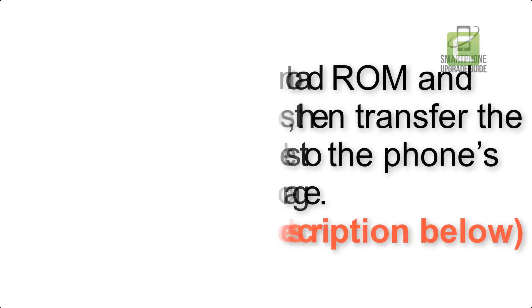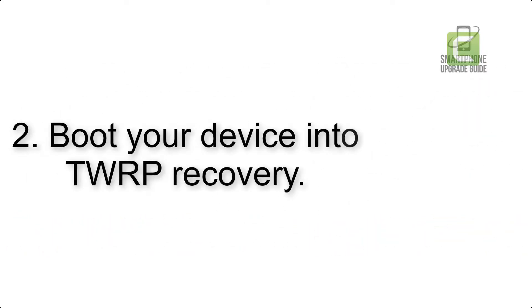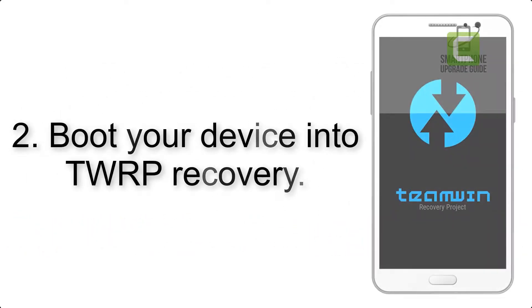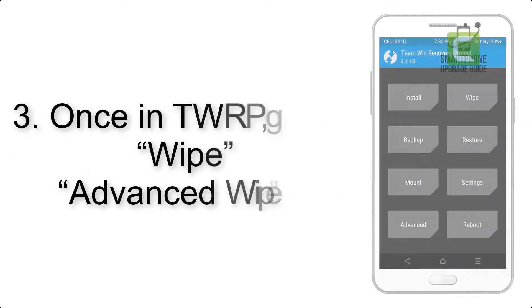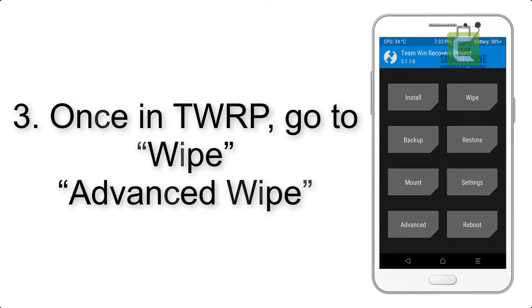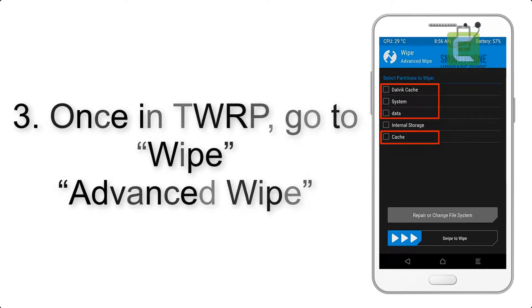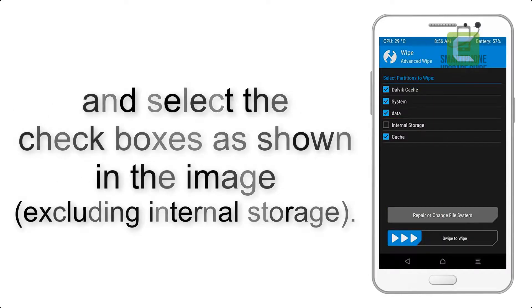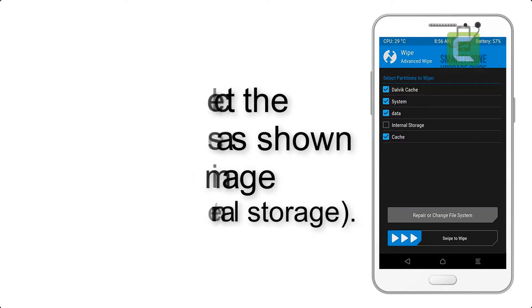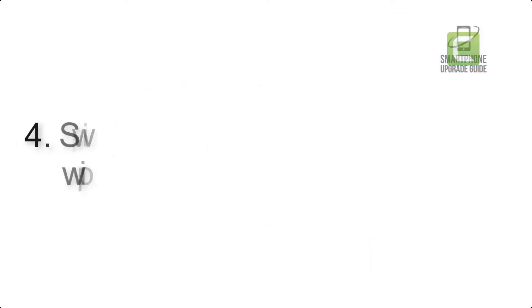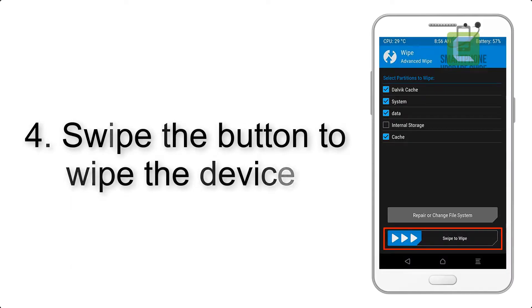Step 3: boot your device into TWRP recovery. Once in TWRP, click on Wipe, then Advanced Wipe, and select the checkboxes as shown in the image, excluding internal storage. Step 4: swipe the button to wipe the device.